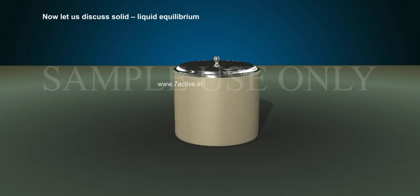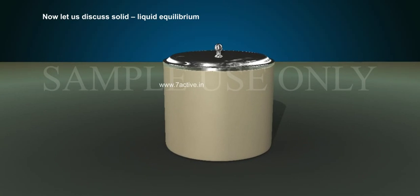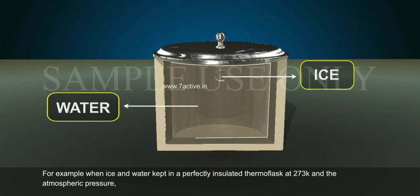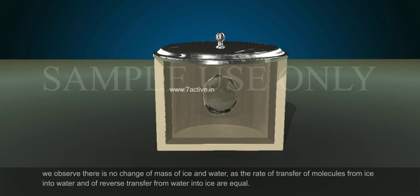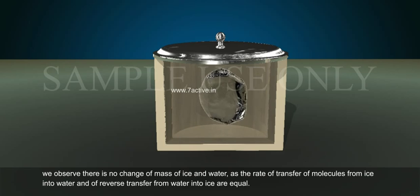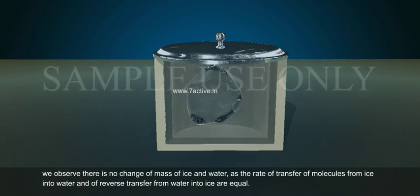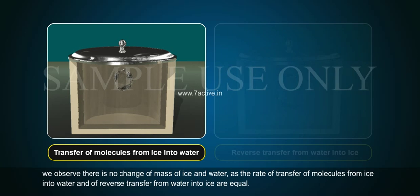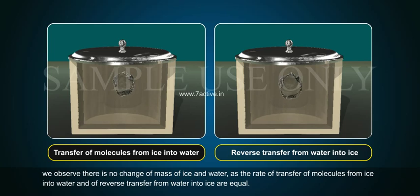Now, let us discuss solid-liquid equilibrium. For example, when ice and water are kept in a perfectly insulated thermoflask at 273 Kelvin and atmospheric pressure, we observe there is no change of mass of ice and water, as the rate of transfer of molecules from ice into water and of reverse transfer from water into ice are equal.